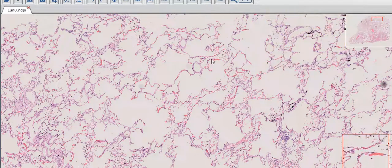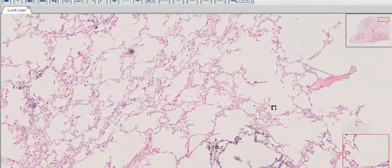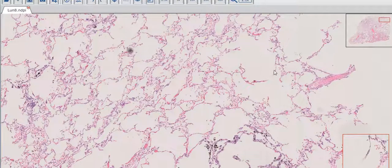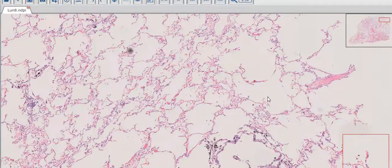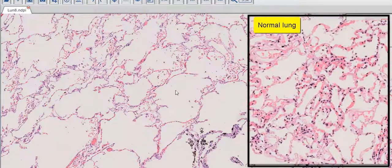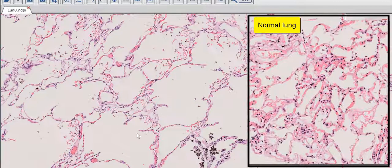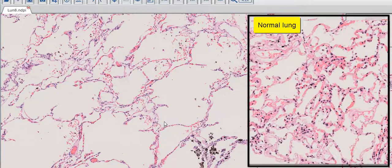Microscopically, we will see that these airspaces are indeed dilated. As I move around, you can see that they are larger. In fact, many of the walls or the septae of the alveolar spaces look like they are floating around and this is a characteristic appearance in emphysema.